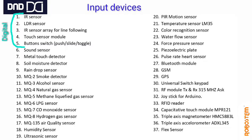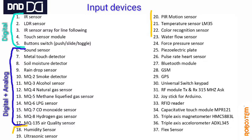Out of all these input devices, the first one to five are only digital input devices — programming is very simple and they can be used only as digital sensors, not analog. From 6 to 17, these act as both digital as well as analog sensors. From 18 to 37, these are all analog input devices.